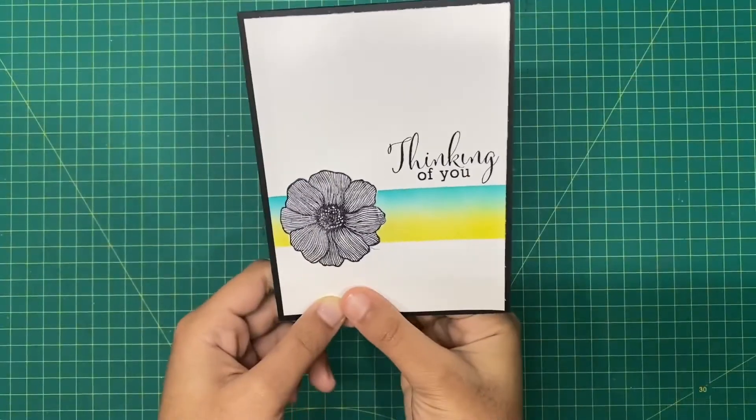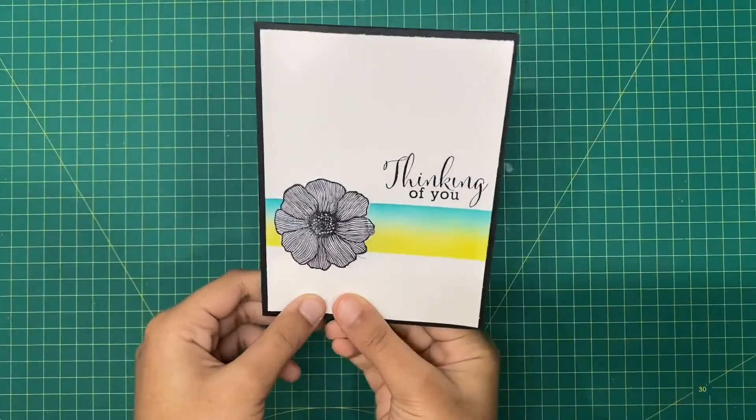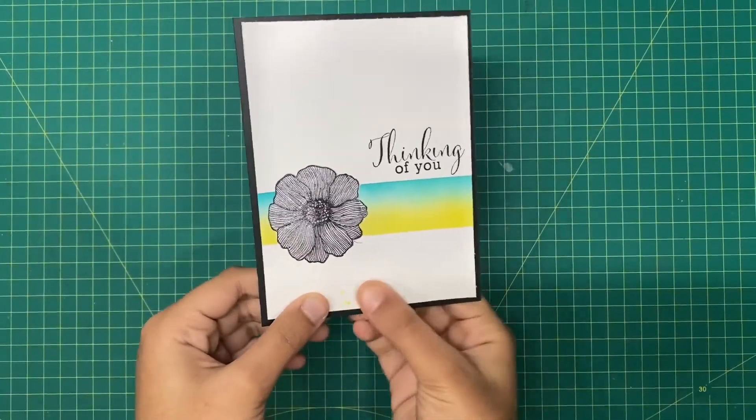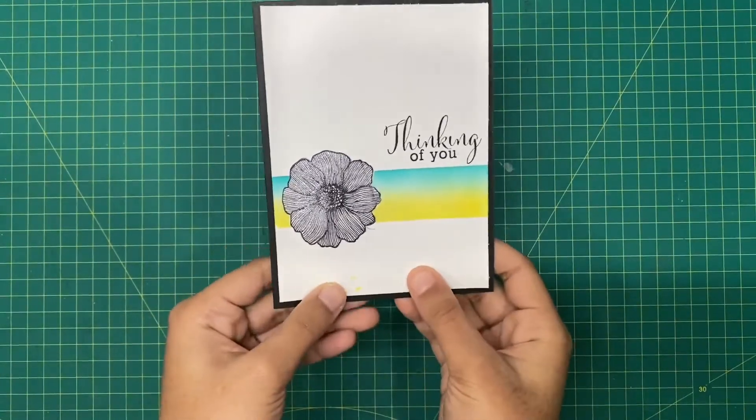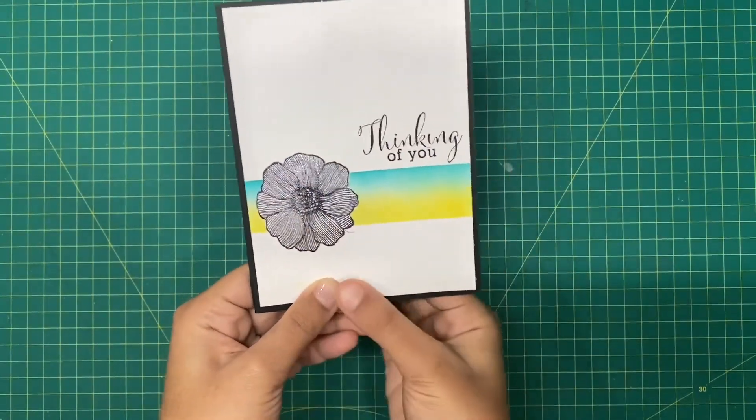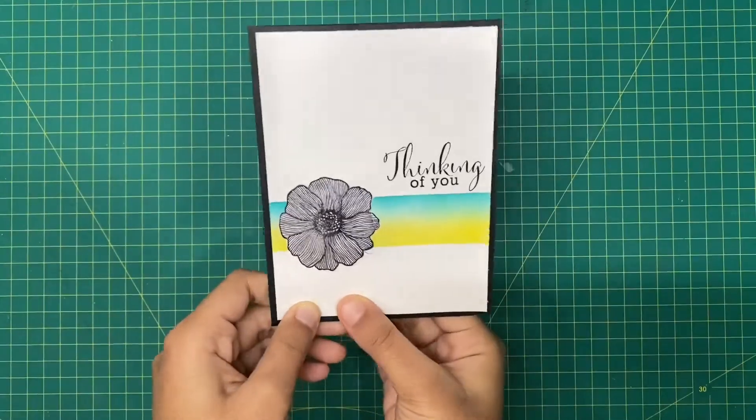I'm done making our card using the dye ink method everybody. As you can see, I added some glitter to the sunflower to make it stand out a bit, which is a totally optional step to do.